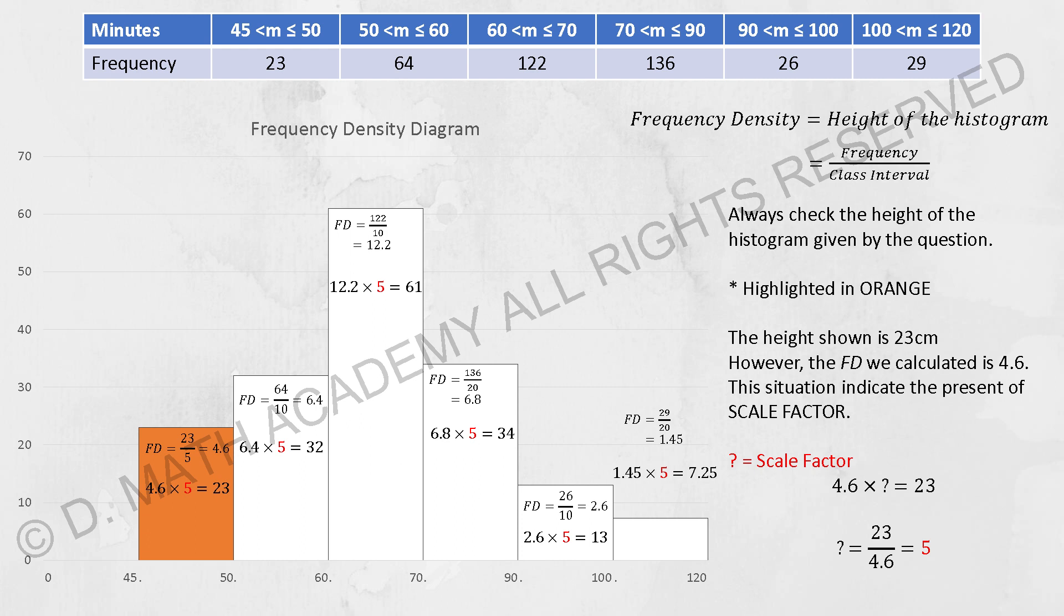Then you will know there's a scale factor of 5 involved over there. So for the rest of the calculation, you are required to multiply all the frequency density value that you gotten using frequency divided by class interval. Then you are required to multiply 5 into it to get the respective value as 32, 61, 34, 13 and 7.25.